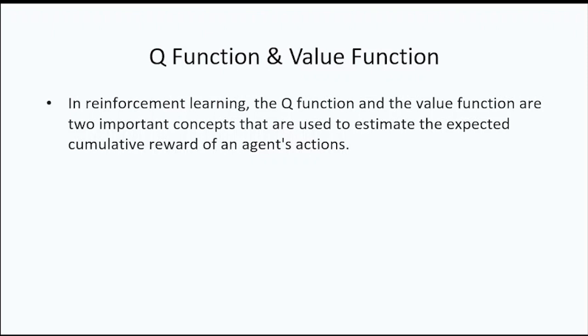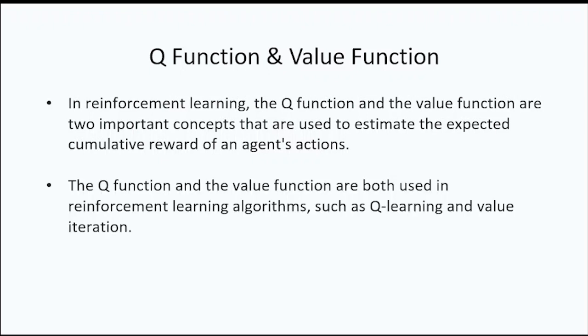In reinforcement learning, Q functions and value functions are two important concepts used to estimate the expected cumulative rewards of an agent's actions. The Q function estimates the expected cumulative reward of taking a particular action in a given state, while the value function estimates the expected cumulative reward of being in a particular state. Both are used in reinforcement learning algorithms such as Q-learning and value iteration, applied in environments like games, robotics, and finance.